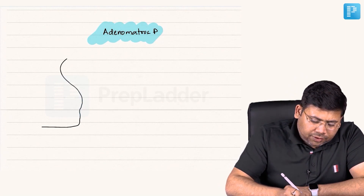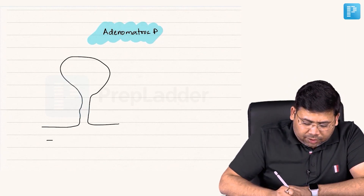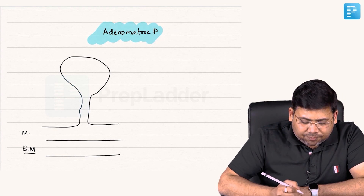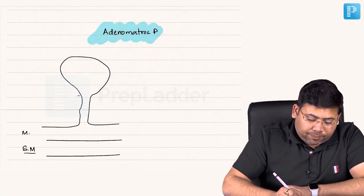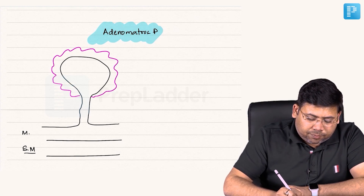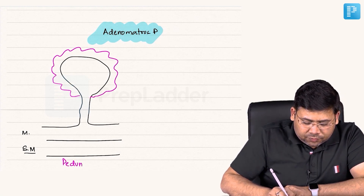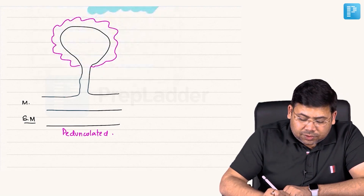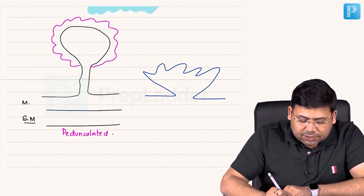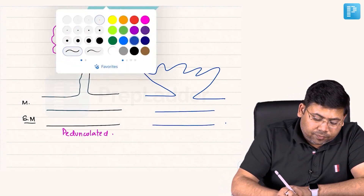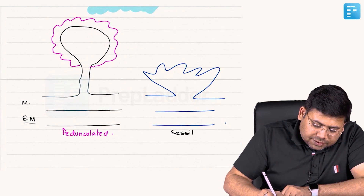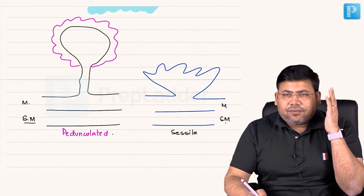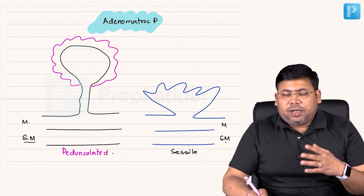A polyp is a mucosal hypertrophy — it arises from the mucosa, but its root can penetrate up to the submucosa also. The variety having a peduncle is known as a pedunculated polyp. We also have a polyp known as a sessile polyp. When comparing pedunculated versus sessile, we consider mucosa and submucosa — and there is a classic classification for this.